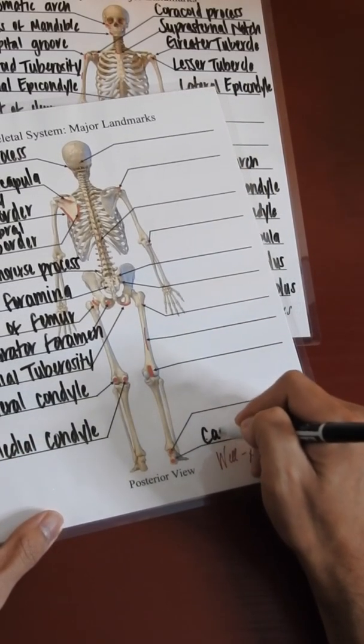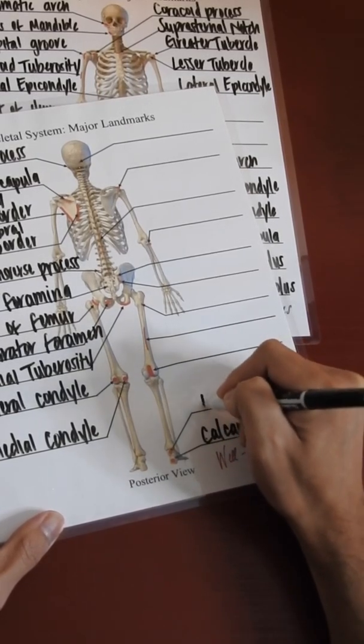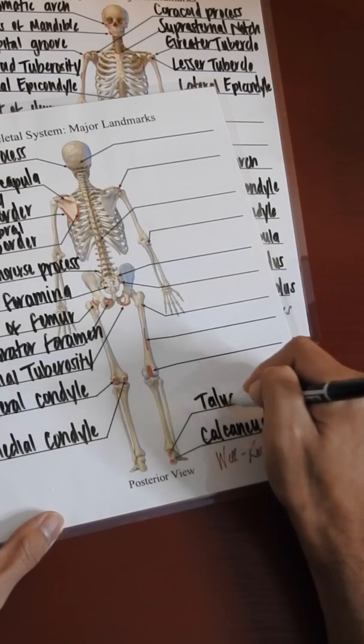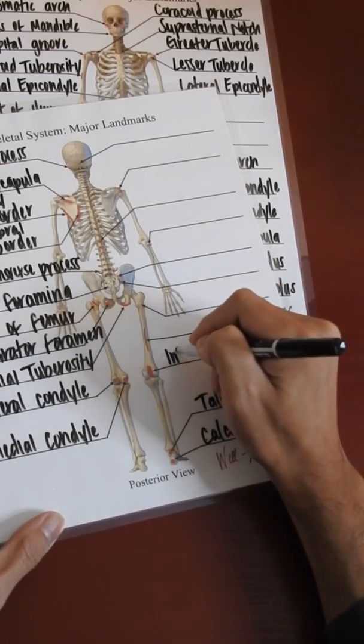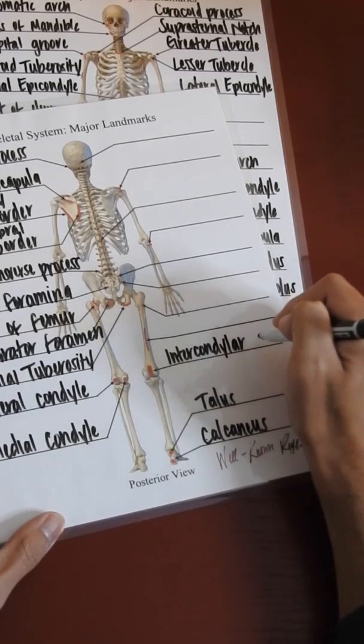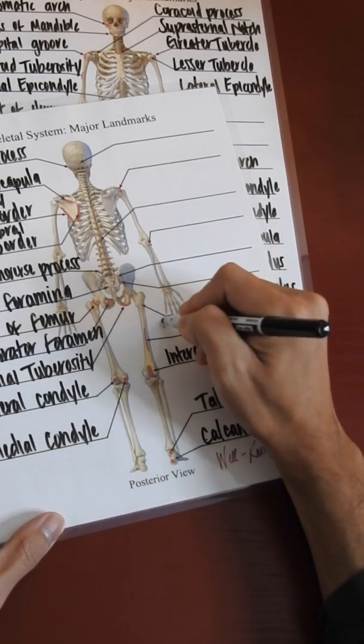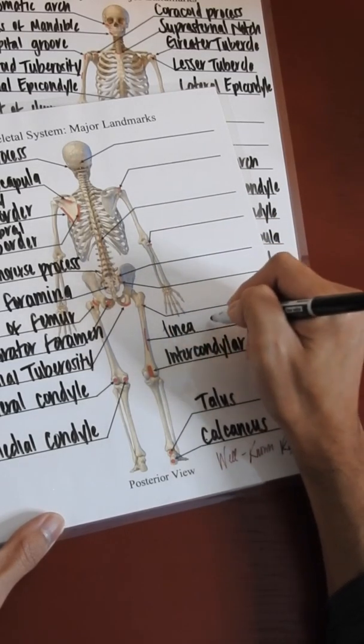We have the calcaneus, we have the talus, we have the intercondylar fossa, and we have the linea aspera of the posterior femur.